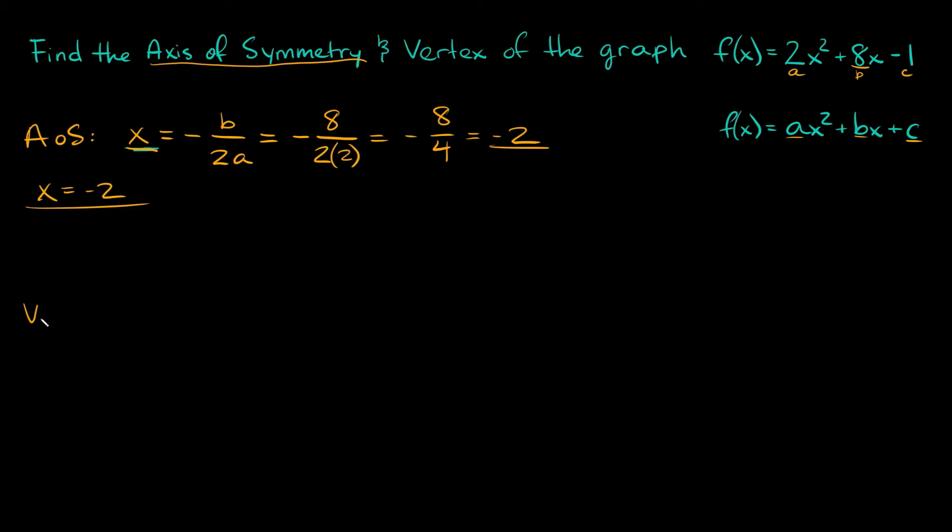Now we need to find the vertex. What you need to remember about the vertex is that the axis of symmetry runs straight through the vertex. We don't know where the vertex is, but we do know now where the x-coordinate of the vertex is. The vertex is at negative 2 comma something, because we just found what the x-coordinate is. It's at negative 2.